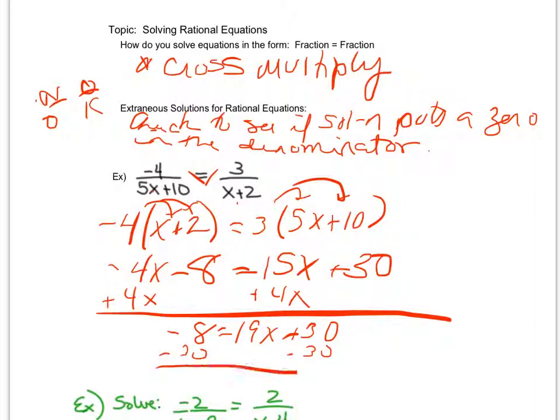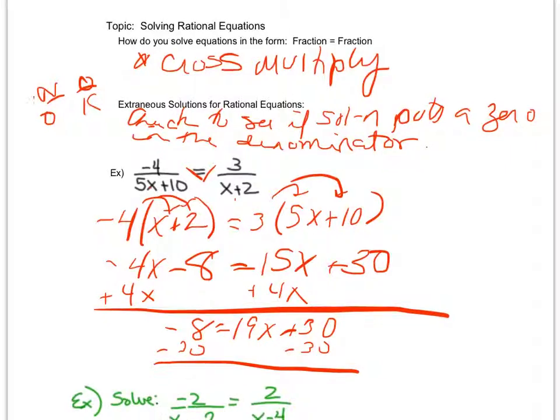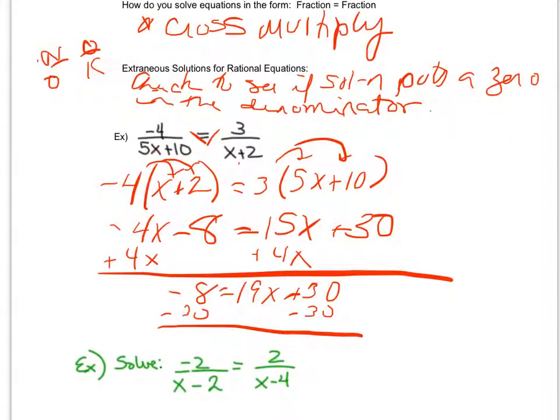That then gives me negative 38 equals 19x. From here to solve for x, I have one remaining step. I'll divide both sides by 19. When I do negative 38 divided by 19 gives me x equals negative 2.